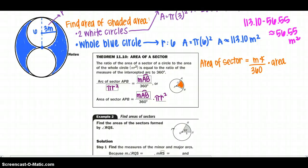Alright, so we're going to go down to 11.10, the area of a sector. Remember, that's the area that's bounded between two radii. So the ratio of the area of a sector of a circle to the area of the whole circle, which is your pi r squared, is equal to the ratio of the measure of the intercepted arcs to 360. So we're going to use half of what we used yesterday and put it into our equation.